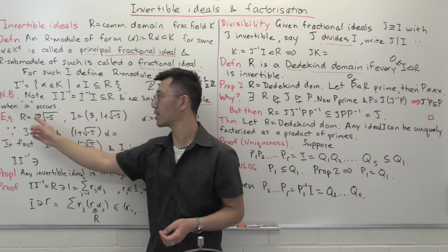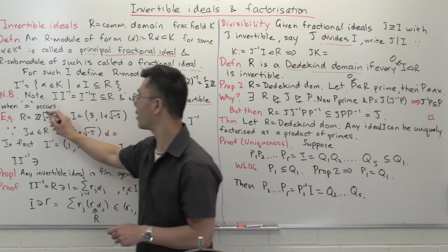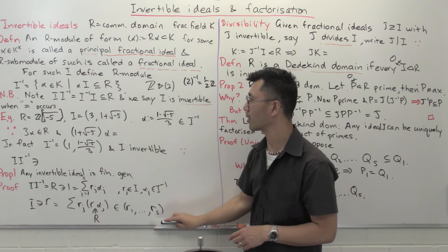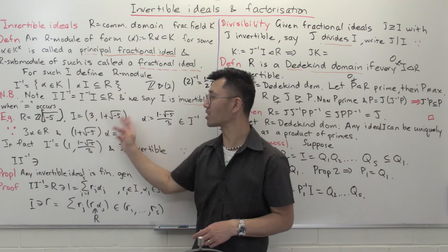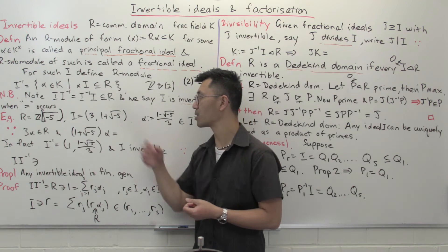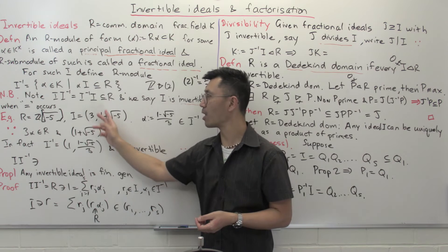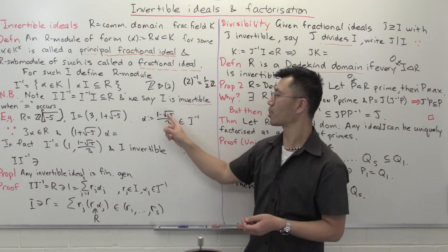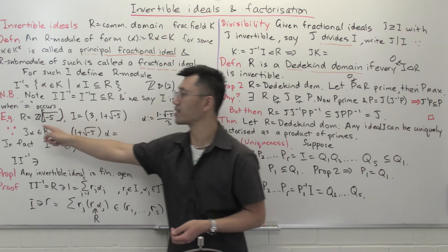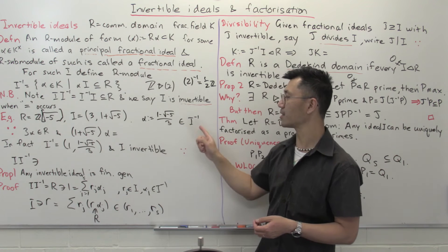So the ideal generated by 2 is invertible and its inverse ideal is the ideal generated by one-half. Let's look at a more interesting case where we don't have principal fractional ideals. Let's look at the case where R is the ring of integers Z adjoined the square root of minus 5. In this ring, we have the ideal — which is a maximal ideal in fact — generated by 3 and 1 plus the square root of minus 5. This is not a principal ideal. Let's try to work out what the inverse of this is. I want to show you an interesting element in the inverse: it's going to be (1 minus the square root of minus 5) divided by 3.